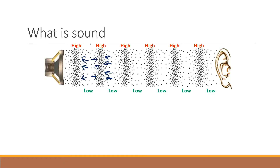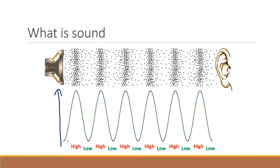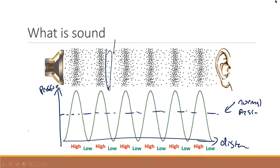We can take this information and plot it. We can plot the areas of high density and low density, with pressure on the y-axis and distance on the x-axis. A line in the middle represents normal pressure. Points above normal are areas of high pressure, and points below are areas of low pressure. This gives us a curve — does anyone know what this type of curve is called?